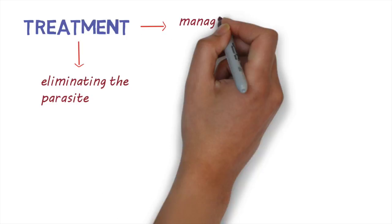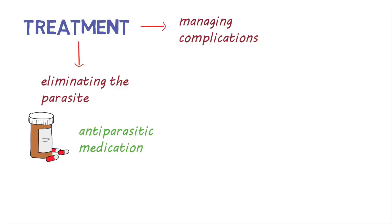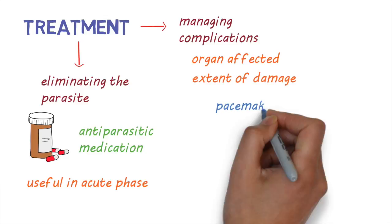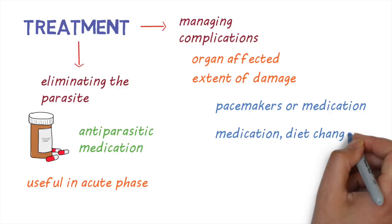How do we treat the disease? Treatment focuses on two aspects: eliminating the parasite and managing any complications. Anti-parasitic medicine can be used to kill the parasite and is most effective in the acute phase. Treating the complications of the disease will depend on the organ affected and how bad the damage to the organ is. They include pacemakers or medication for heart rhythm abnormalities, medication, changes in diet, or surgery for intestinal complications.